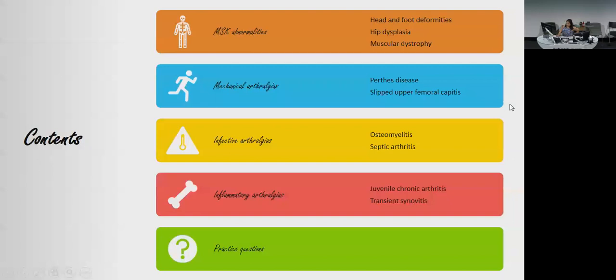So these are the matrix conditions for these three topics. MSK abnormalities: you apparently need to know head and foot deformities, hip dysplasia, muscular dystrophy, mechanicals, Perthes, and SCFE basically. Infective is just osteo versus septic arthritis, and then inflammatory is just these two simple ones, and then we'll go through some practice questions. The content I'm teaching you is foundational level, and the MCQs are actually quite straightforward.